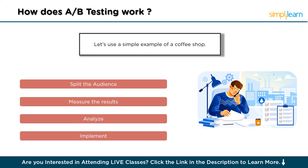Knowing that the free coffee offer worked better, the coffee shop decides to use Version B moving forward to attract more people to its loyalty program. This A-B testing example shows how a simple experiment can provide valuable insights into customer preferences, allowing businesses to make informed decisions that drive success.